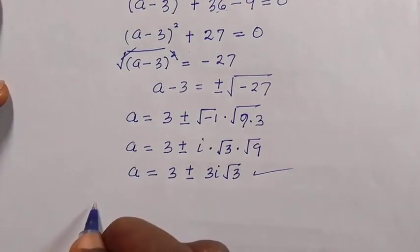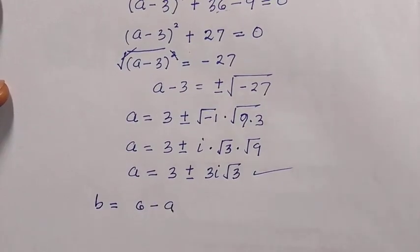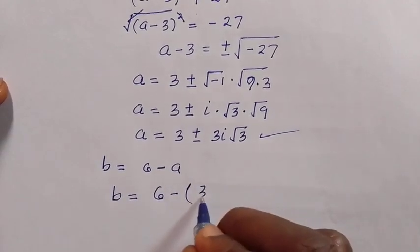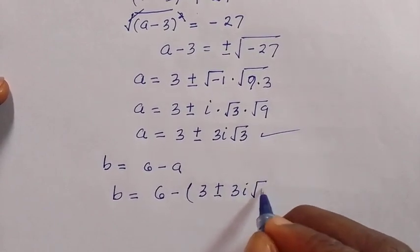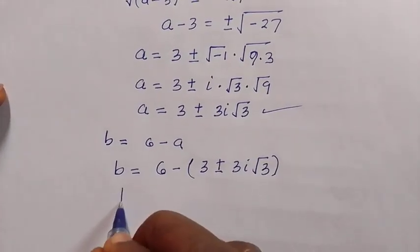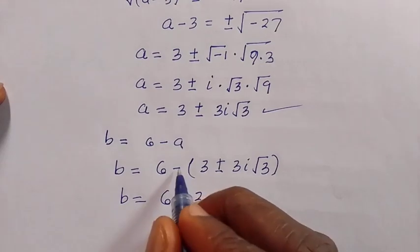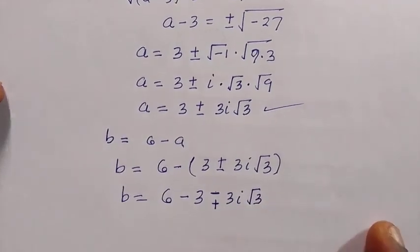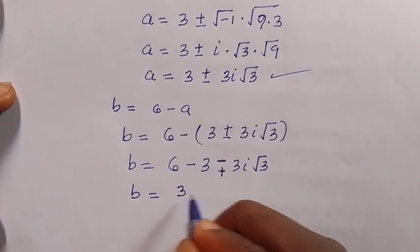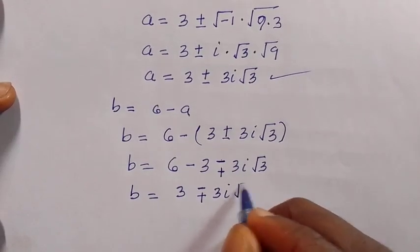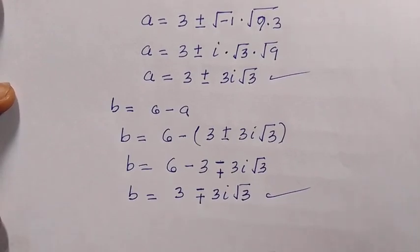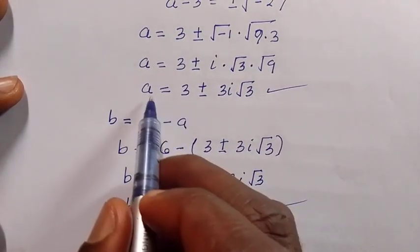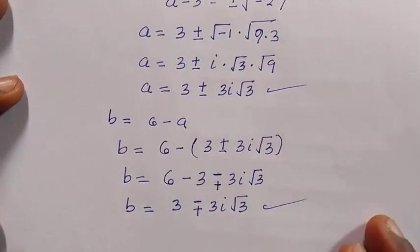To find b, we use equation 3: b equals 6 minus a. Replacing a with (3 plus or minus 3i root 3), we get b equals 6 minus 3, which is 3, and then minus (plus or minus 3i root 3), giving b equals 3 minus or plus 3i root 3. So when a equals 3 plus 3i root 3, b equals 3 minus 3i root 3, and when a equals 3 minus 3i root 3, b equals 3 plus 3i root 3.